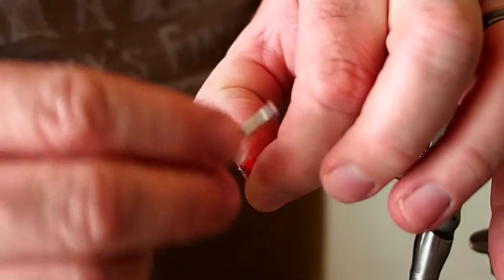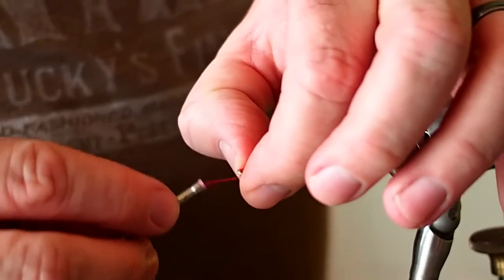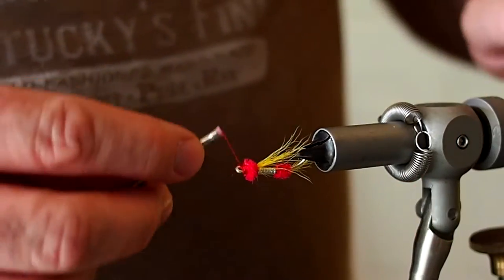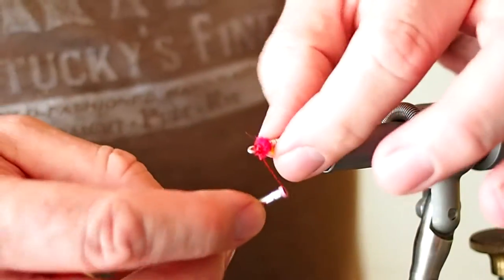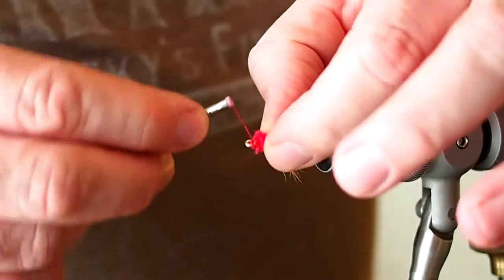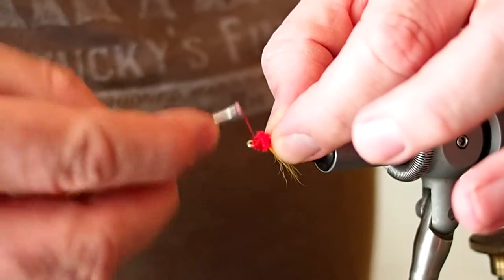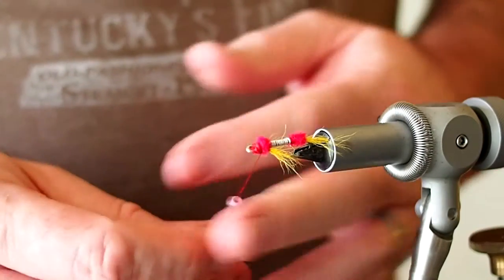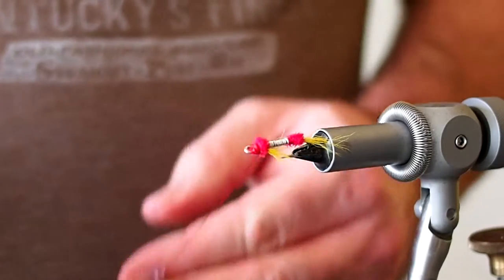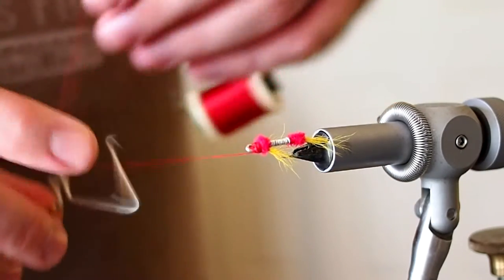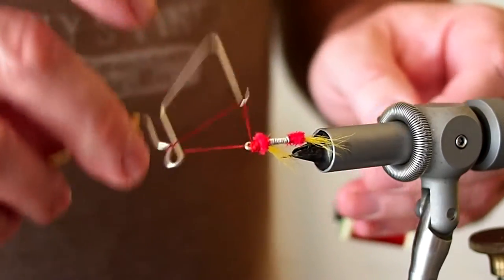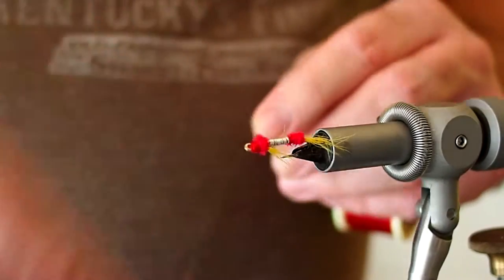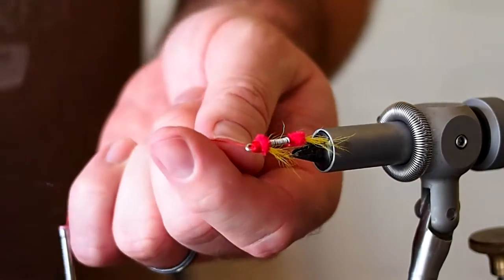And then just build up a small head in front of the chenille. And whip finish it. Snip away your thread.